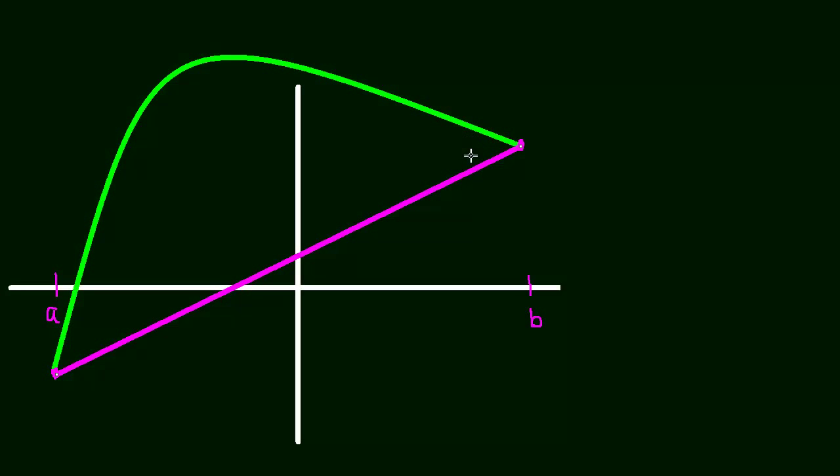Now what the mean value theorem says is that the slope of this secant line, the slope of this purple secant line, the function is equal to that slope at some point, at at least one point.